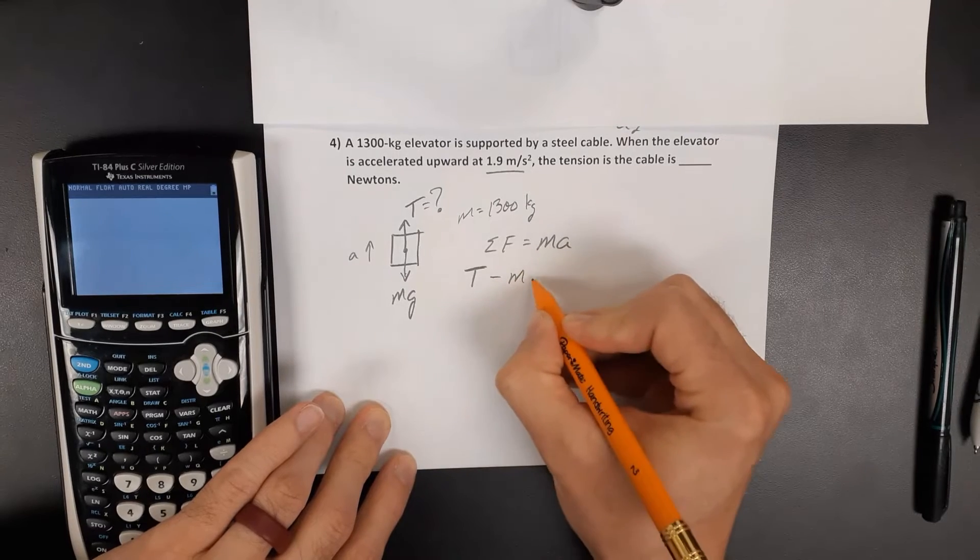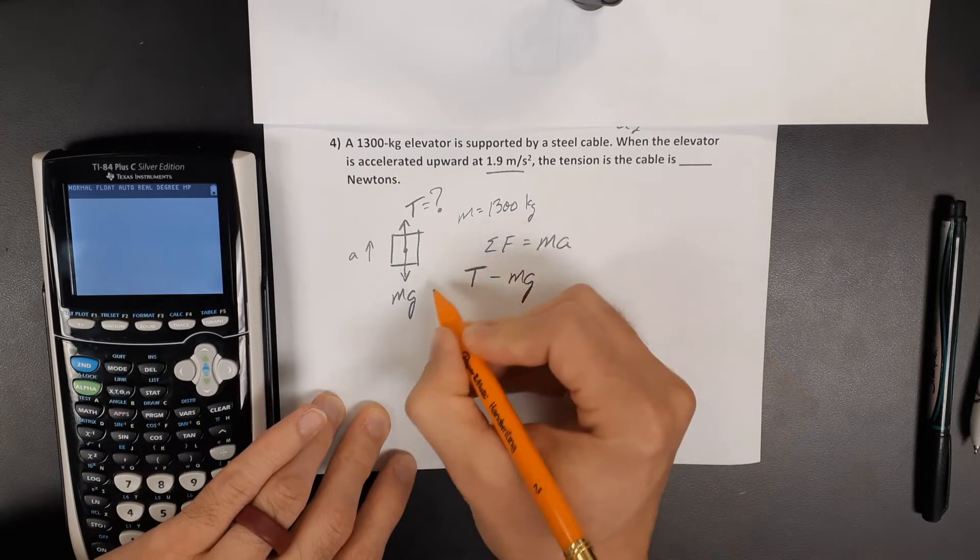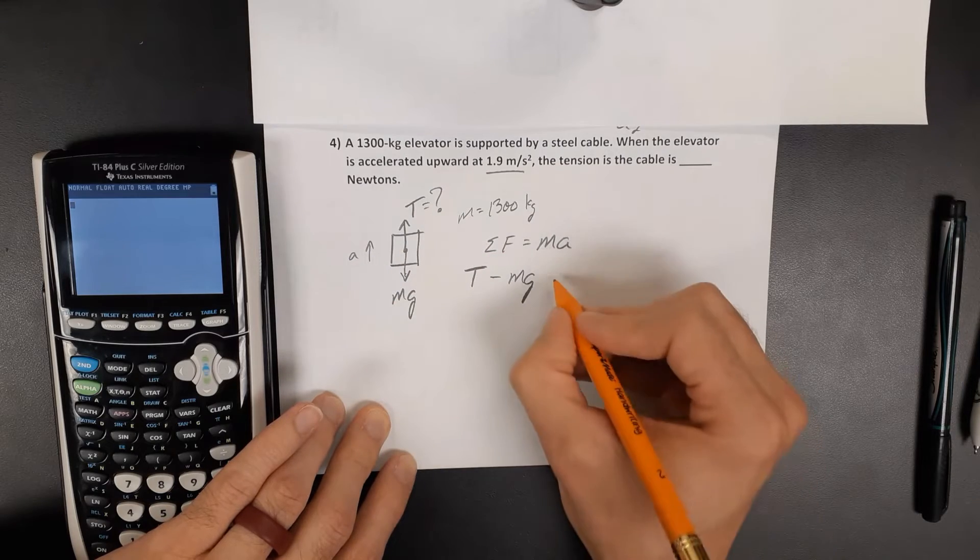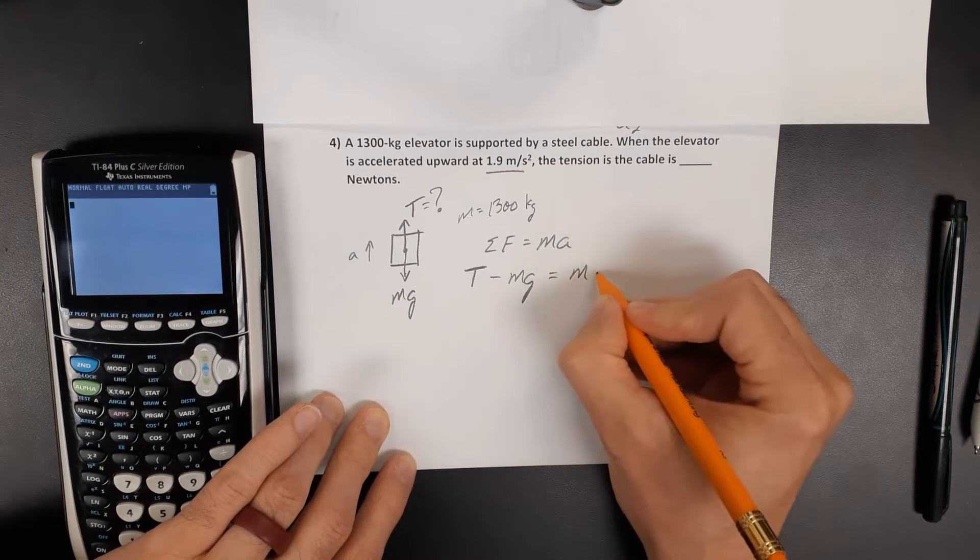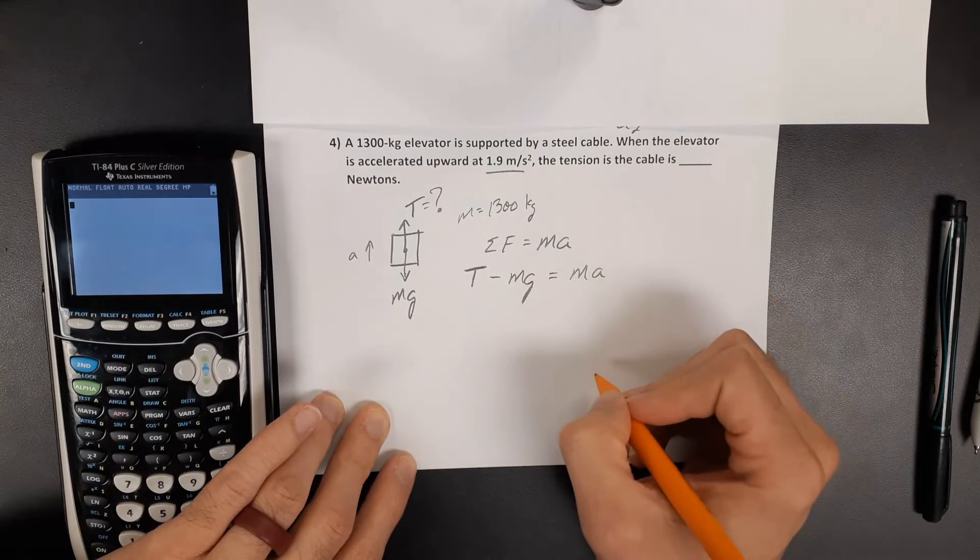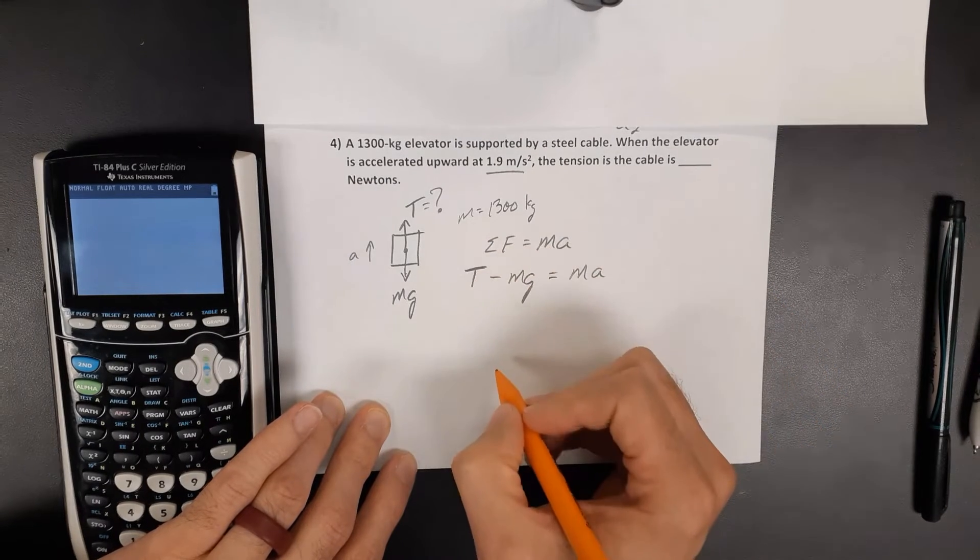minus the force of gravity. Those two forces impact the elevator's acceleration. When they are combined, they are the net force. They equal mass times acceleration. We want to solve for tension.